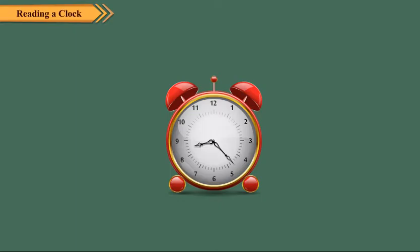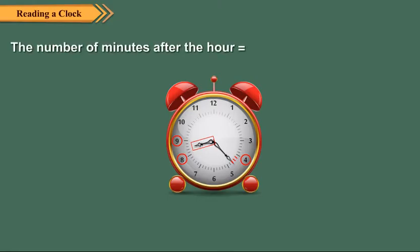Look at this clock. The hour hand is between 8 and 9. The minute hand is three small divisions beyond 4. So, the number of minutes after the hour is equal to 4 × 5 plus 3, which equals 20 plus 3, which is 23. So, the time on the clock is 8:23.